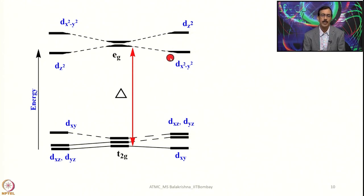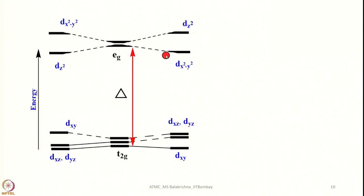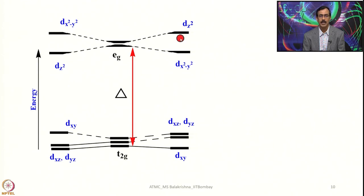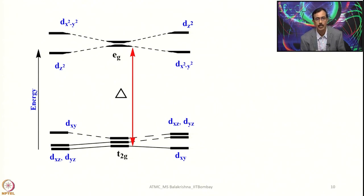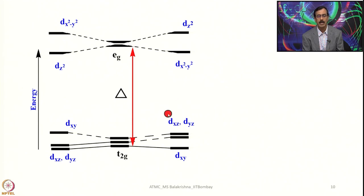So, in the first case we have 2 longer bonds along z and 4 shorter bonds in the plane — tetragonal elongation — and in the second case, 4 longer bonds in the plane and 2 shorter bonds along z — tetragonal compression. Tetragonal elongation is more pronounced and more stable because having 4 stronger in-plane bonds and 2 weaker axial bonds provides more stabilization than the reverse arrangement.